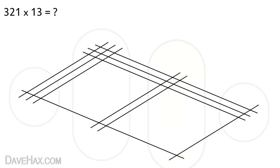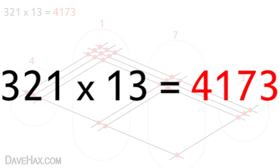Then starting from the right again, we'll count out the dots. Three. One at the bottom: 2, 3, 4, 5, 6, 7. Then 1, 2, 3, 4, 5, 6, 7, 8, 9, 10, 11. So again we leave the last digit there, carry the first digit over to the next zone and add it to the dots. 1, 2, 3 plus 1 gives us 4. 4, 1, 7, 3. So our answer: 321 times 13 is 4173.